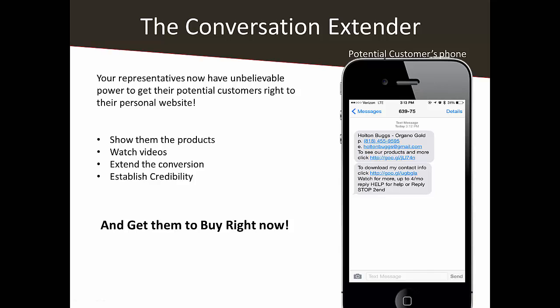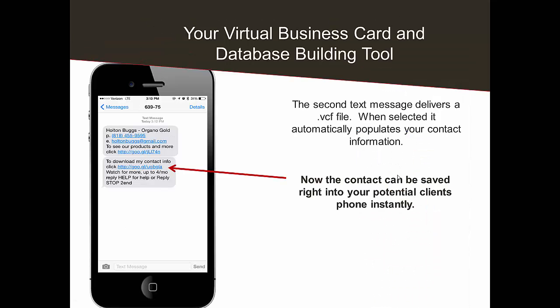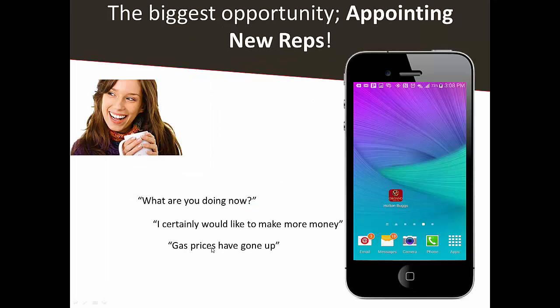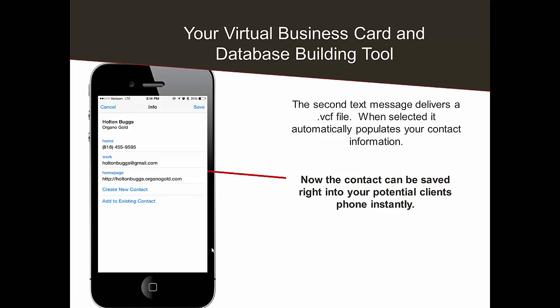The second text message is the actual VCF file — that's your contact information. When you click on it, it downloads and saves right into their phone, including your replicated site, right into that person's phone. You just hit save. They've saved your contact information right into their phone. It really is a virtual business card, because you're literally handing the file right to their phone. It works on an iPhone, Android, or Windows phone — it just populates all your information right into their phone, instantly.